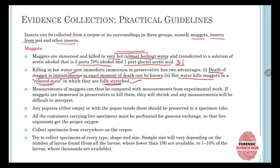Any pupae — empty or with the pupae inside — should be preserved in a specimen tube. All containers carrying live specimens must be perforated for gaseous exchange so that the live organisms get proper oxygen and can still breathe. Collect specimens from everywhere on the corpse and try to collect specimens of every type, shape, and size. Sample size will vary depending on the number of larvae found — from all larvae where fewer than 100 are available, to 1–10% of the larvae where thousands are available.